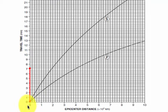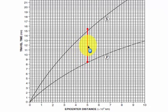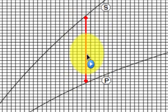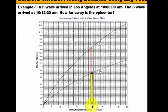Once you've marked off 0 and your lag time of 7 minutes and 20 seconds on your scrap paper, you slide the paper so that your 0-minute mark rides along the P-wave curve. You're looking for the spot where both marks fit perfectly — where the 0 sits on the P-wave curve and the 7:20 mark simultaneously sits on the S-wave curve. Once you find that position where both marks fit perfectly, it's just a matter of dropping down and reading the x-axis. When we read the x-axis, the distance to the epicenter is 5,800 kilometers.